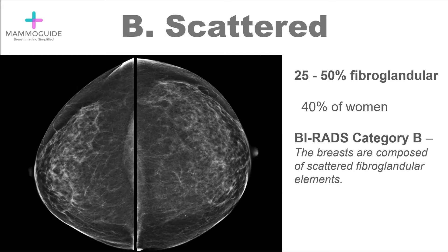The second category, category B, is the scattered category. The official wording is the breasts are composed of scattered fibroglandular elements. This is when there's between 25% to 50% fibroglandular tissue within the breast. It's almost 40% of women that have this type of breast tissue.